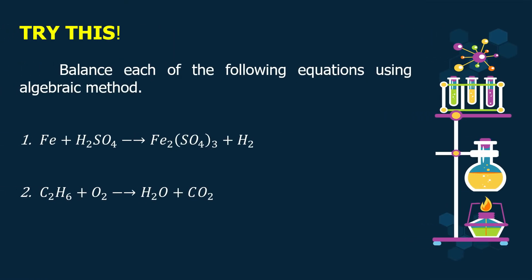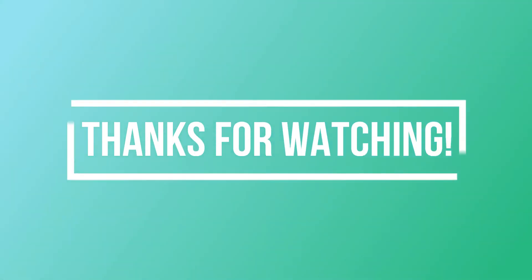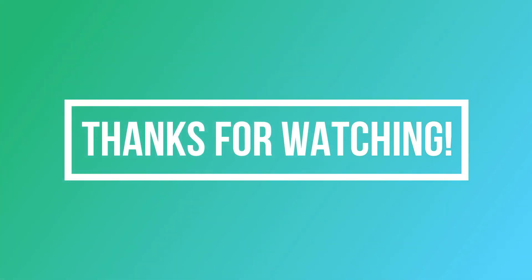For your assignment, try this: balance each of the following equations using algebraic method. Number 1: Iron plus sulfuric acid will form ferric sulfate plus hydrogen. Or in terms of its chemical formula: Fe plus H2SO4 will form Fe2(SO4)3 plus H2. Number 2: Ethane plus oxygen will form water plus carbon dioxide. In terms of its chemical formula: C2H6 plus O2 will form H2O plus CO2.